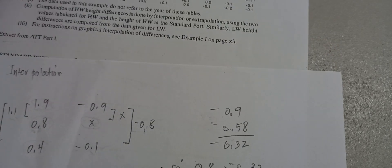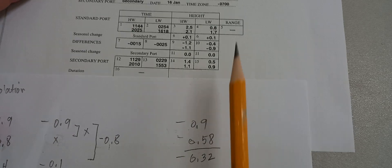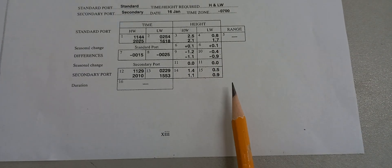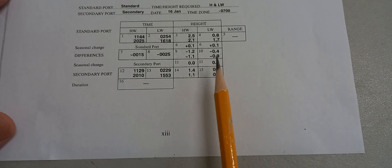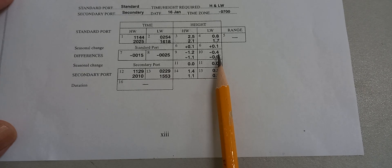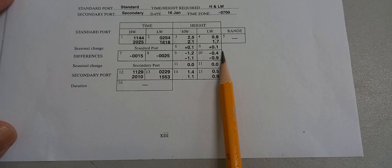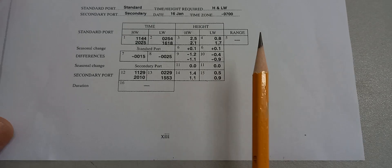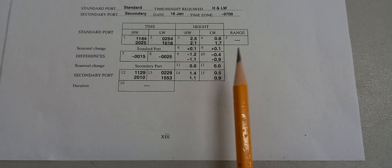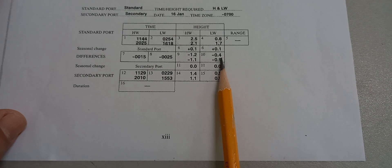In the example from the Admiralty Tide Tables they put 0.4 — they may have rounded it up to 0.4.